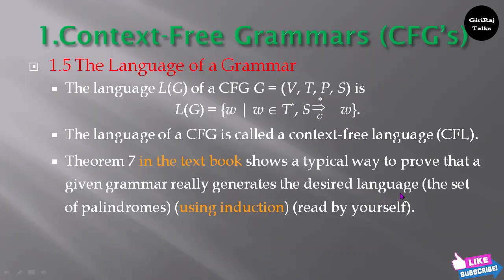That example is the set of palindromes. A palindrome is a string like 'madam' — if you write it in reverse order you get the same string. Similarly, 'I am Adam' is also a palindrome. Such examples you can observe from the textbook in Theorem 7, so go through that and you will understand.